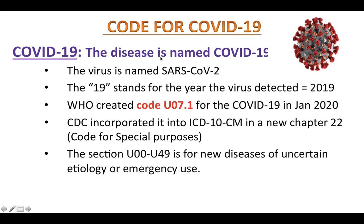What is the code for COVID-19? The World Health Organization broke down the name of both the disease and the virus. The disease is named COVID-19, short for coronavirus disease. The virus is named SARS-CoV-2, short for severe acute respiratory syndrome coronavirus 2. The '19' in COVID-19 stands for the year the virus was first detected, which is 2019.